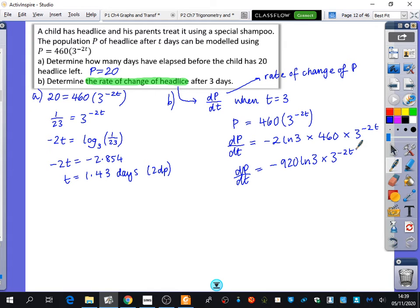So, that is dp dt is equal to 460 times two. That's minus 920 Ln3 times three to the power of minus two t. Now, I don't want you to type anything in your calculator just yet. I want you to think about what kind of answer you would expect. Considering Nabil has told us about this shampoo, and it's going to kill the lice, what kind of number do we expect for the rate of change of the population of the lice? We expect negative.